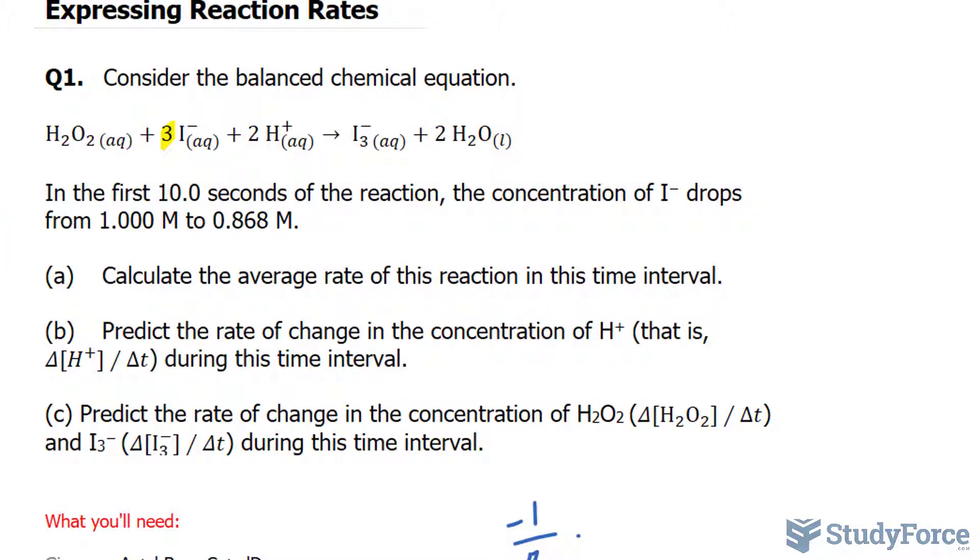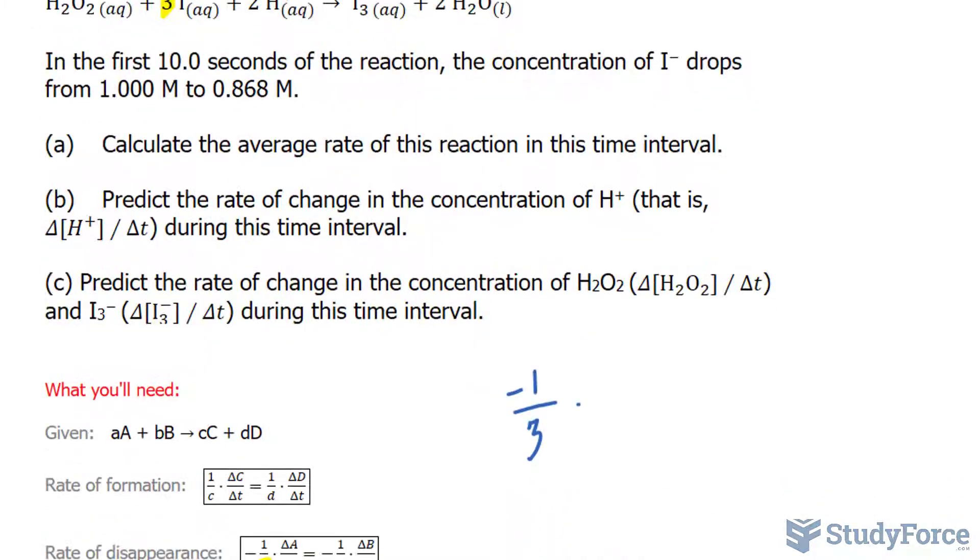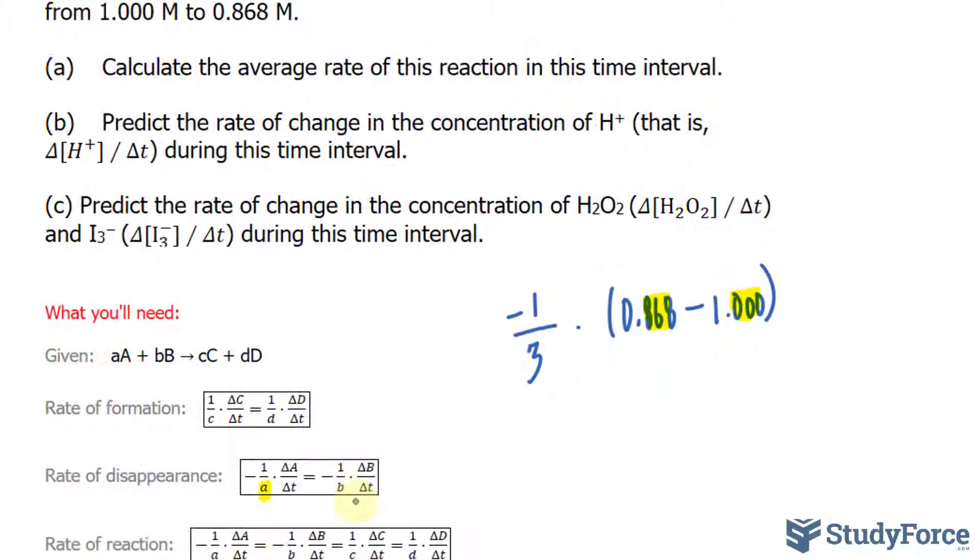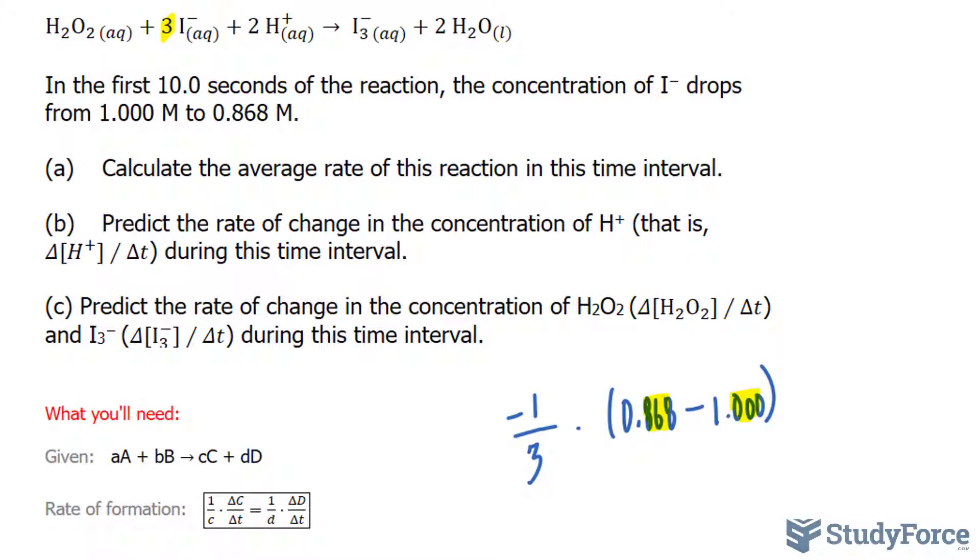And when we find the change of something, we take the final minus the initial. So I'm going to subtract 0.868 molar with 1.000. We have 4 significant figures here and 3 significant figures here. And when it comes to subtracting, we only care about the number after the decimal place. So we should have a number with 3 significant figures after the decimal place. To calculate the change in time, the denominator, we take the final minus the initial. We're told that this happens in 10 seconds. So the change in time is 10. All we have to do now is compute this.